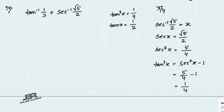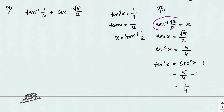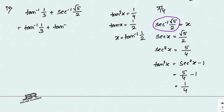From tan²(x) = 1/4, we get tan(x) = 1/2, so x = tan⁻¹(1/2). Since x was sec⁻¹(√5/2), we replace it to write: tan⁻¹(1/3) + tan⁻¹(1/2).